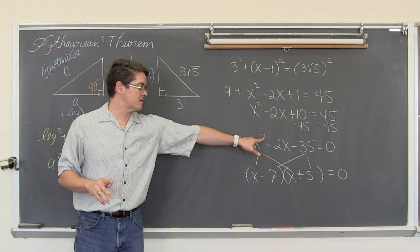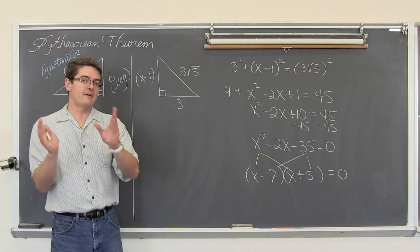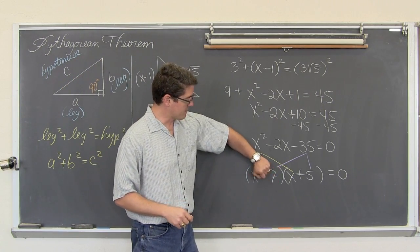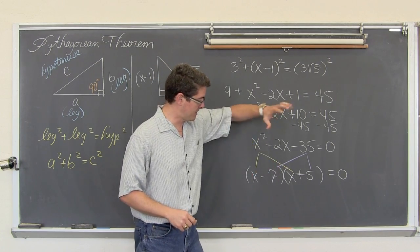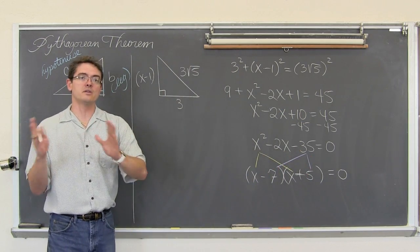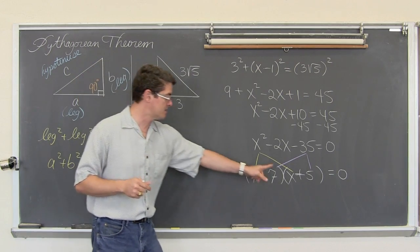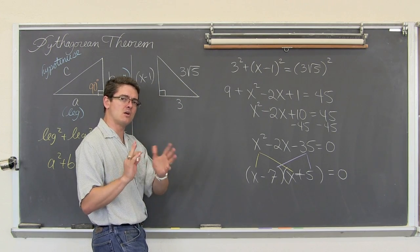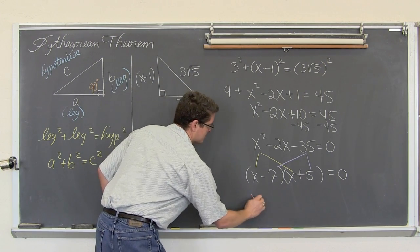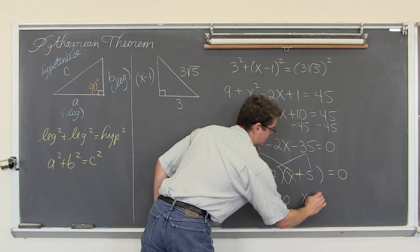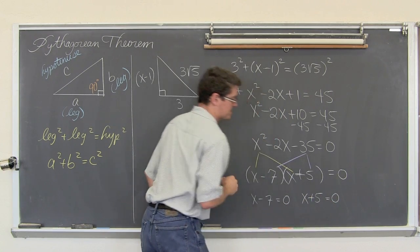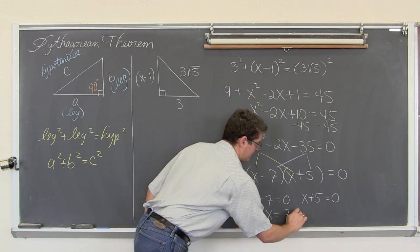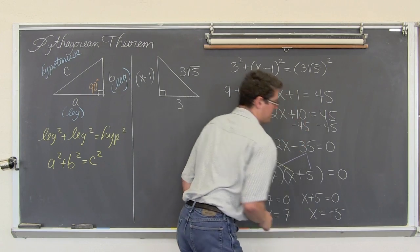Now after you have taken a quadratic — that is a degree of 2 — and factored it, you set each factor equal to zero. This is something times something equals zero, so one of those two factors has to be zero for the product to equal zero. So x minus 7 equals zero and x plus 5 equals zero. Solving each one gives us x equals 7 and x equals negative 5.